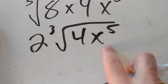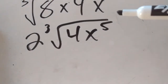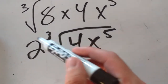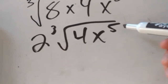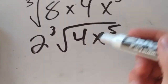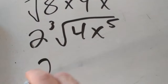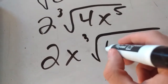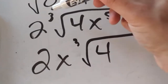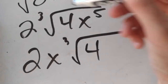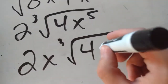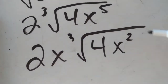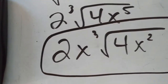Now we handle x to the power of 5. Take the exponent and divide it by the index of the root: 5 divided by 3 is 1 remainder 2. So x to the power of 5 gives us x to the power of 1 on the outside, and x squared stays inside. Our final answer is 2x times the cube root of 4x squared.